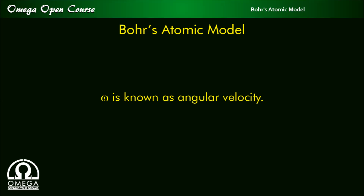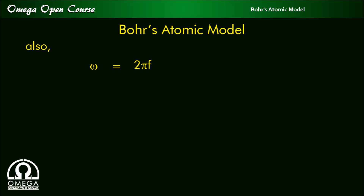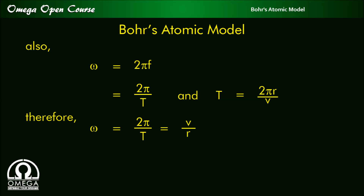Omega is known as angular velocity. Also, ω is equal to 2πf, which equals 2π/t, and since t is equal to 2πr/v, therefore ω is equal to 2π/t, which equals v/r. This means omega is the ratio of the velocity and radius.